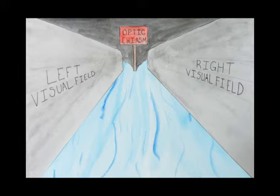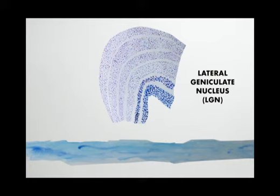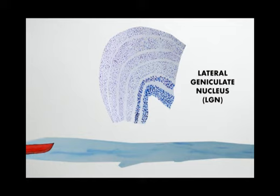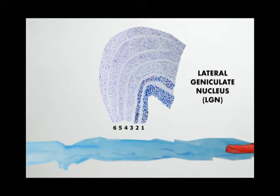After the optic chiasm, the visual signals make a quick stop at the lateral geniculate nucleus, or LGN. The LGN is organized into six layers, which all receive extensive feedback control from higher visual areas.